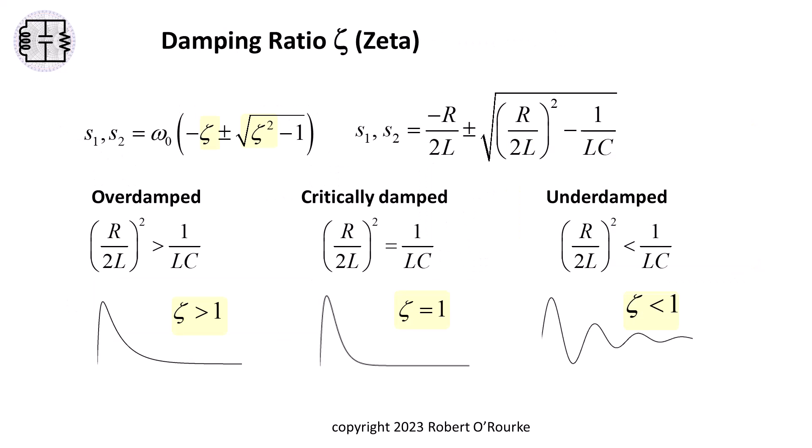Because the R, L, and C expressions in the characteristic root equations can become unwieldy, different variables like alpha or zeta are introduced to both simplify and clarify.